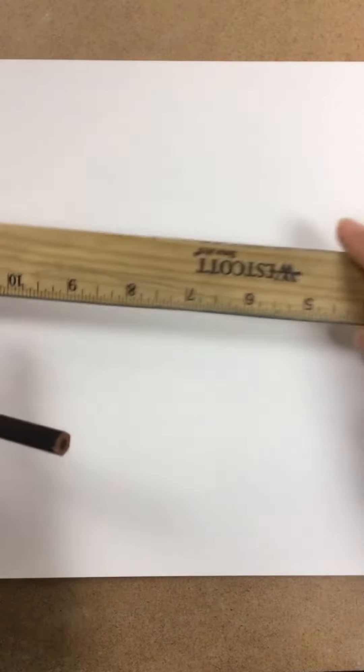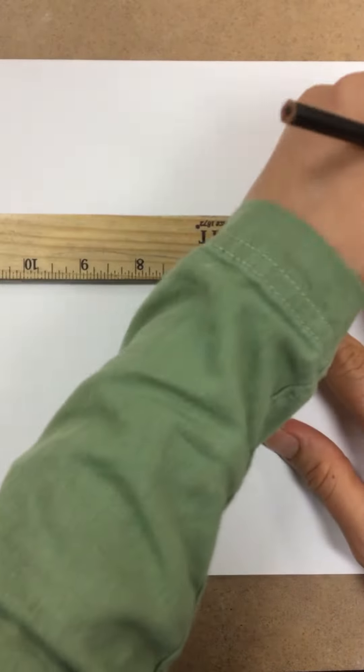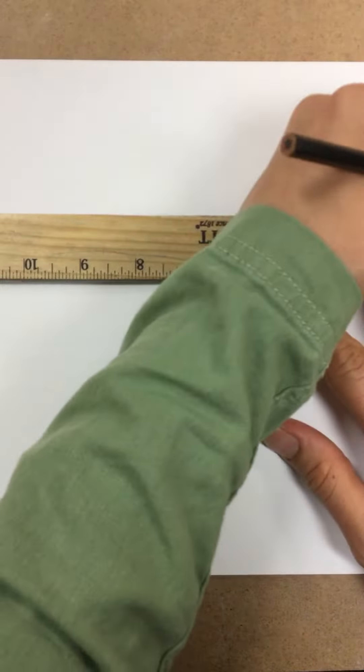Placement. Placing an object lower on the surface of the paper will make it appear closer. This is something we've done many times in the past, especially when we draw landscapes.